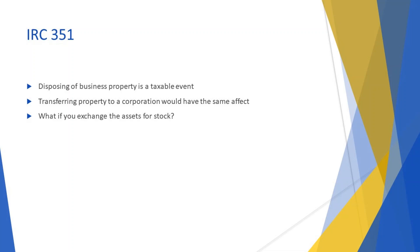Why do we need section 351? Imagine a sole proprietor who is a great candidate for a C corporation or S corporation election. In order to transfer the fixed assets out of the sole proprietorship and into the corporation, you have to use section 351. Remember in your software the line on the fixed assets screen: did business use drop to 50% or less? When the sole proprietorship stops using the assets, they drop to 0% business use, and that would cause a taxable event to occur.